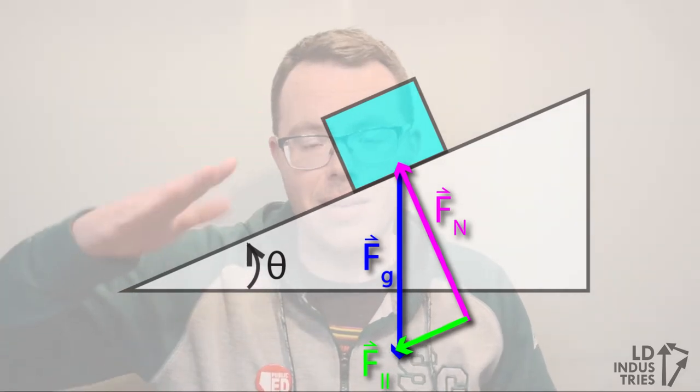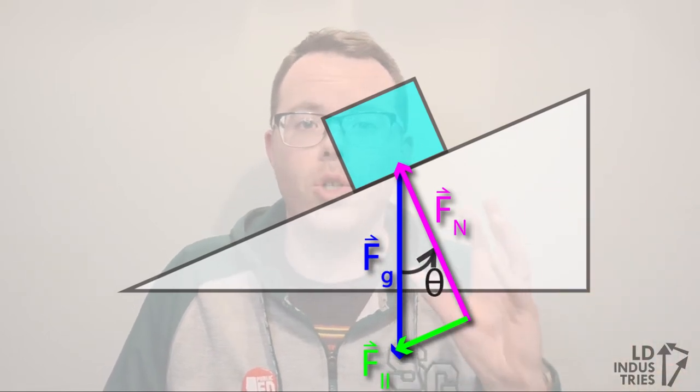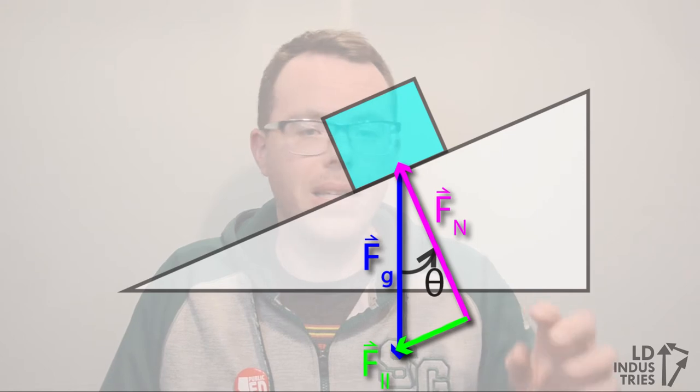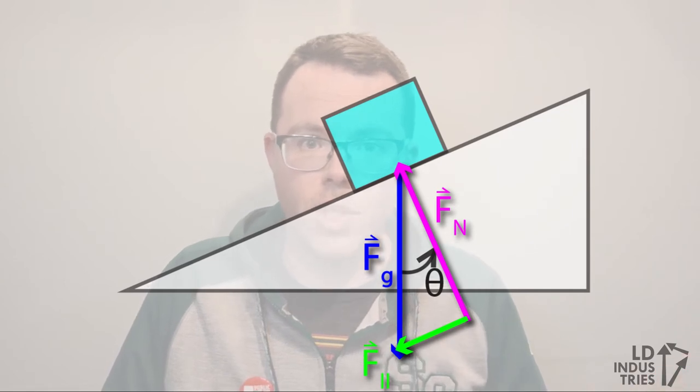And the neat thing about this is the angle of incline that's in the ramp is exactly the same as the top angle in that triangle. Now if we do a little bit of trigonometry here, we can see that the hypotenuse of the right angle triangle is the force of gravity, we can calculate that just using force of gravity equals mg.